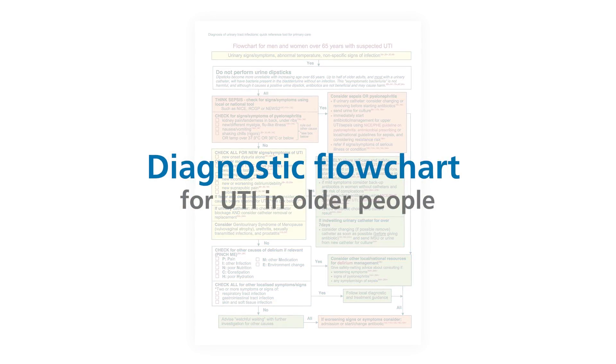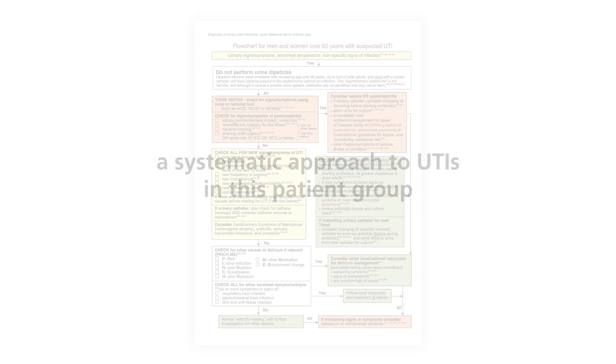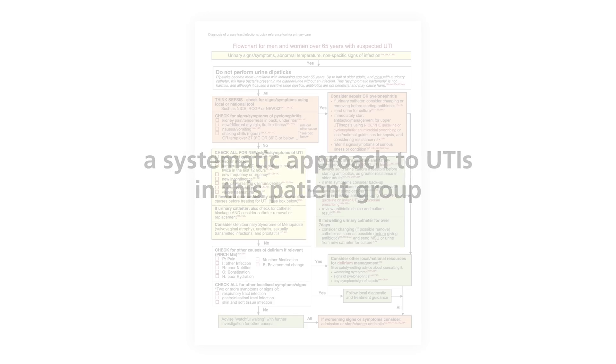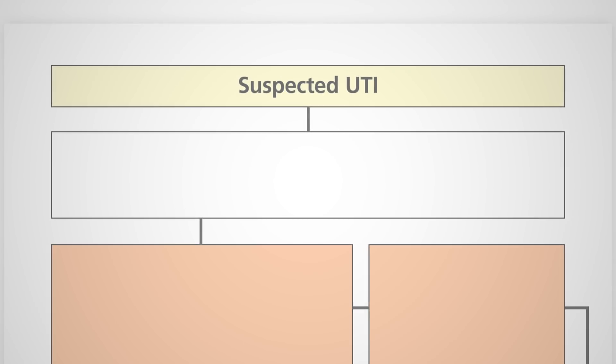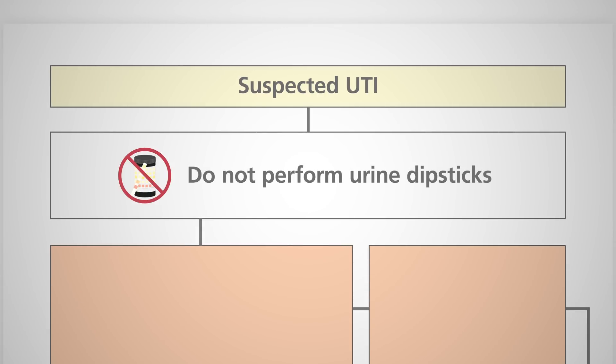Public Health England's flowchart for the diagnosis and management of UTI in older people in primary care outlines a systematic approach to UTIs in this patient group. There are several reasons a UTI might be suspected in an older person: they may have symptoms relating to the urinary tract, for example painful urination. However, if they are not able to communicate their symptoms clearly, they may have non-specific symptoms of infection such as abnormal temperature or new confusion or agitation, called delirium. It is important to remember that a positive dipstick does not confirm the diagnosis of UTI in older people with non-specific symptoms, and it is not recommended as a diagnostic tool.